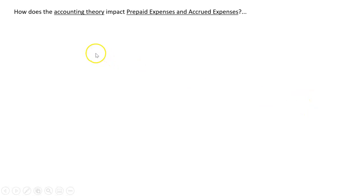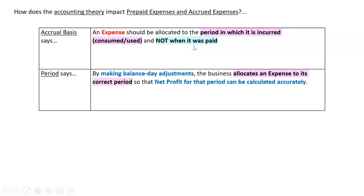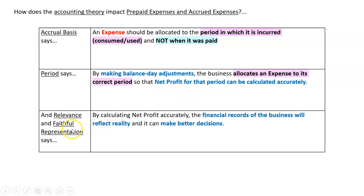To summarize, how does accounting theory impact prepaid and accrued expenses? First, the accrual basis assumption says an expense should be allocated to the period in which it is incurred, consumed, or used — not when it was paid. The period assumption says we should make balance day adjustments to allocate an expense to its correct period so net profit can be calculated accurately. And relevance and faithful representation says that if we calculate net profit accurately, the financial records will reflect reality and the business can make better decisions. We'll now look at more serious business examples of prepaid and accrued expenses in the next videos.